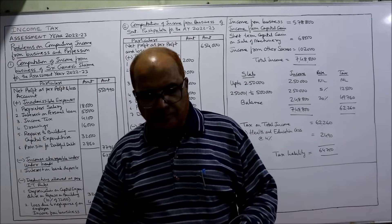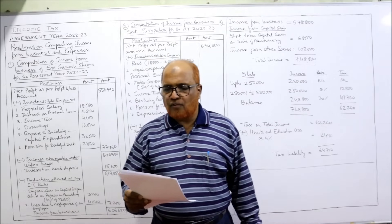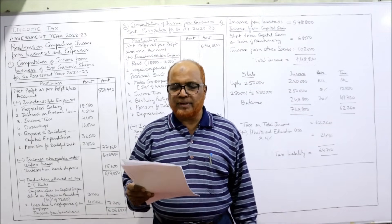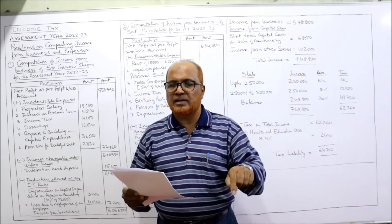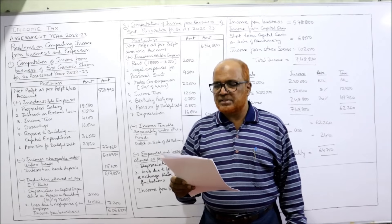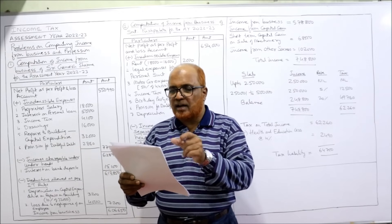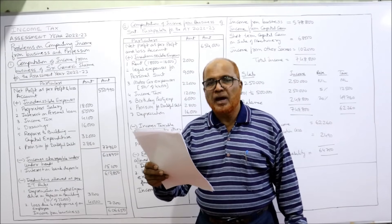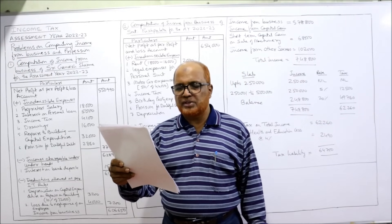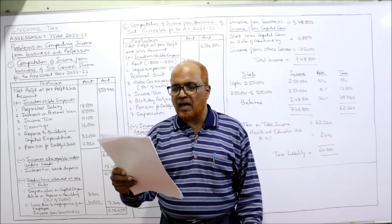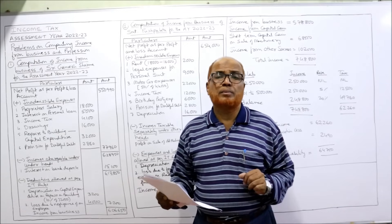First problem: Sri Ganesh Sharma is the owner of a business. Following is the profit and loss account for the previous year 2021-22. The assessment year is 22-23. Compute his income from business for the current assessment year 22-23. The profit and loss account is given with debit side items and credit side items. Additional information: during the previous year, due to negligence of an employee, goods worth rupees 4,000 were damaged fully and there is no insurance for it.